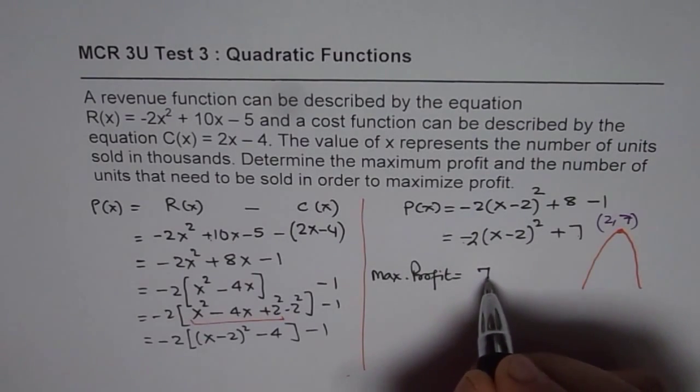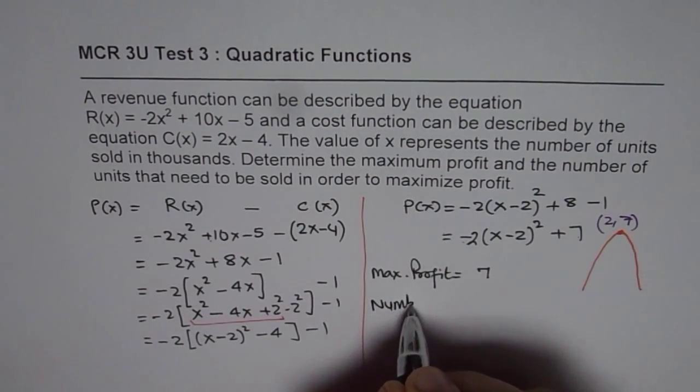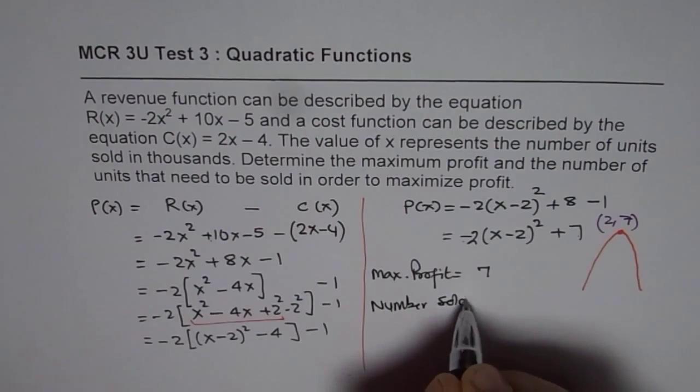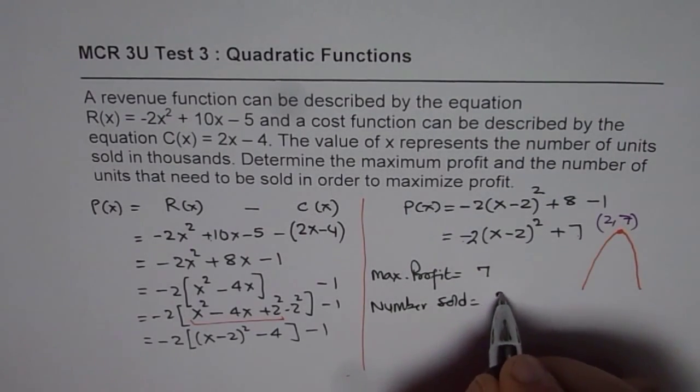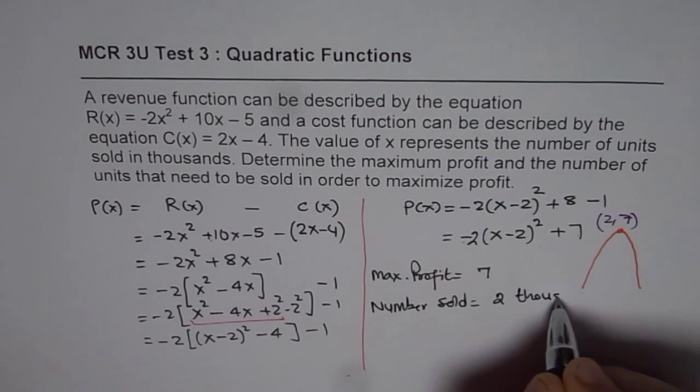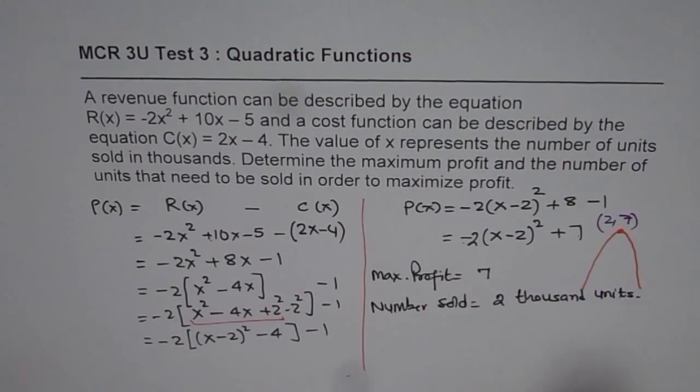We really don't know whether it is thousands or what. Now, and the number sold is x value which is 2 and 2 is 2,000. So we can write 2,000 units.